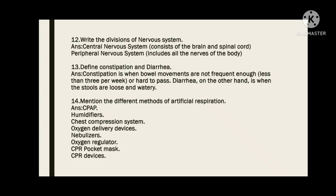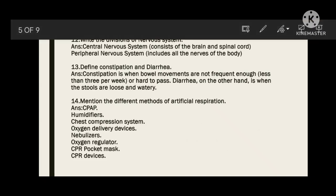Write the divisions of the nervous system: central nervous system and peripheral nervous system — two divisions.